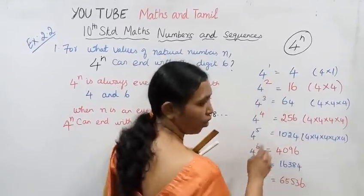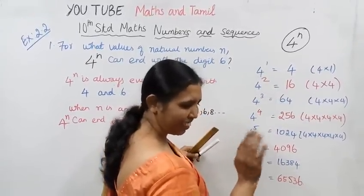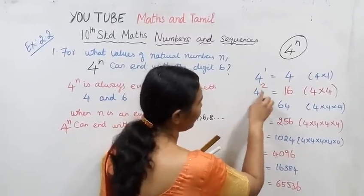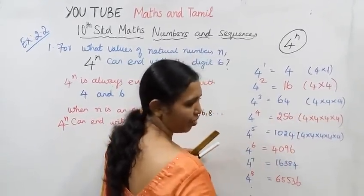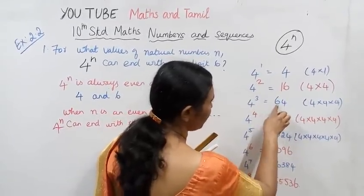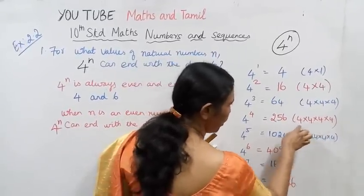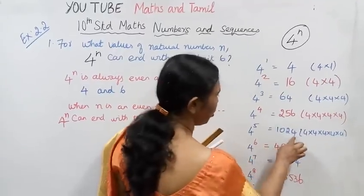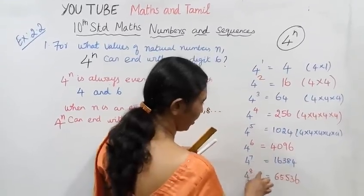4 squared is 16. 4 cubed is 4 into 4 into 4 = 64. 4 power 4 is 256. 4 power 5 is 1024. 4 power 6 is 4096.